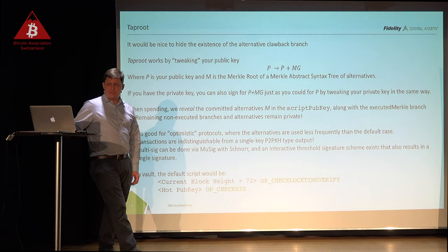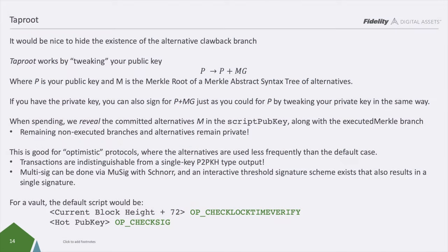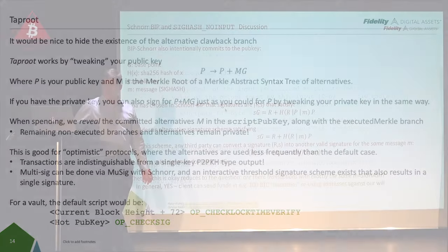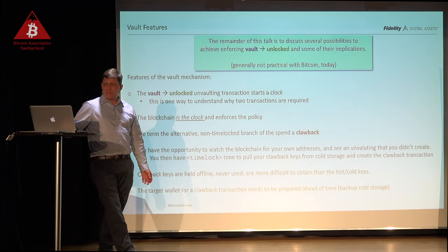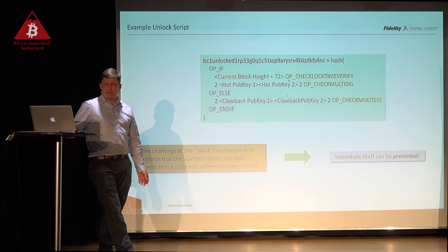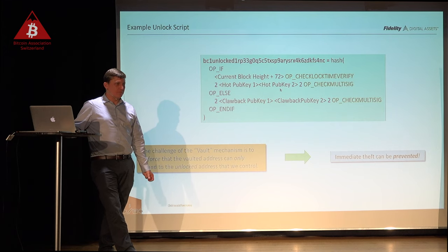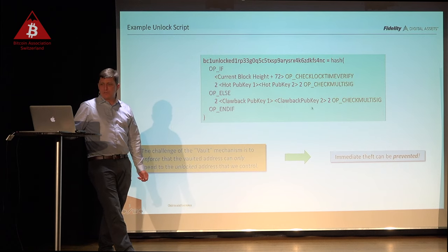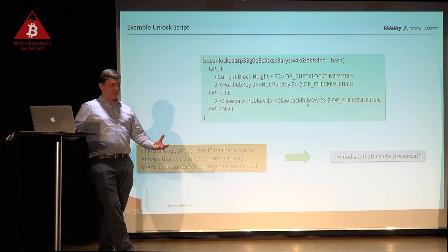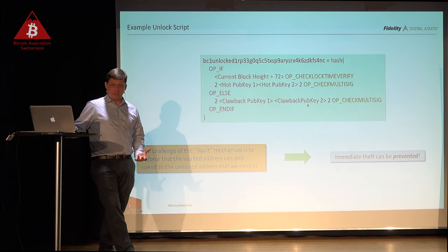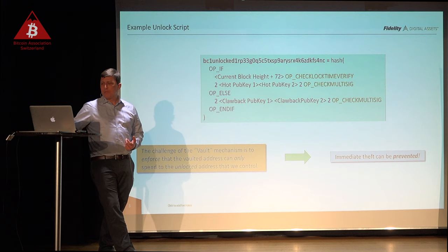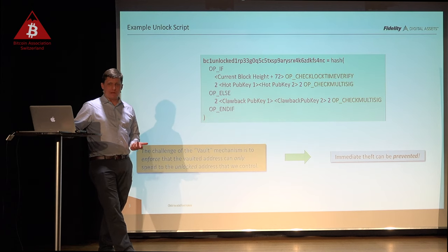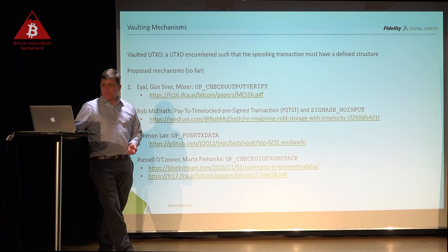The last piece is the ability to hide the fact that you're doing this — because if you use the explicit script, every single person will see this script in every transaction, revealing that there's another way to spend your funds involving two keys. As a thief, I could go and try to find those keys. It would be really cool if nobody could see that at all. That's where Taproot comes in.